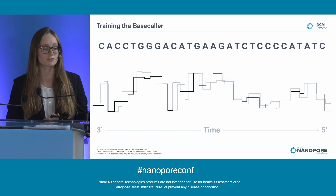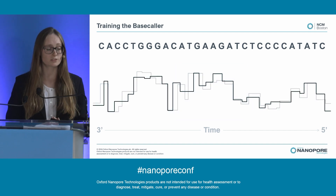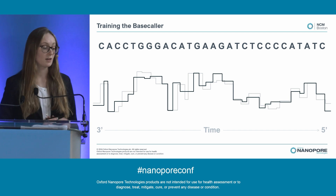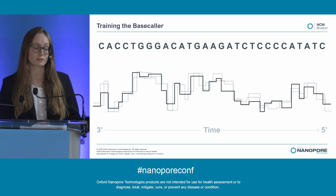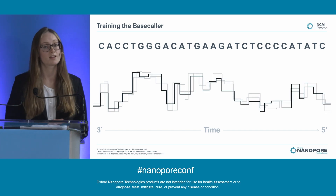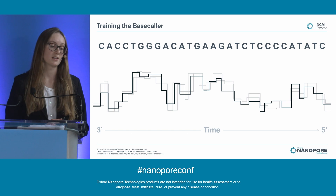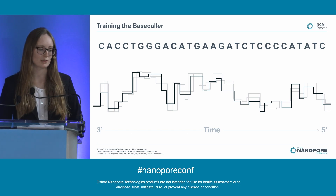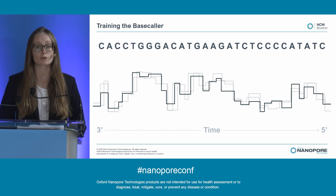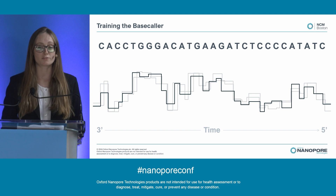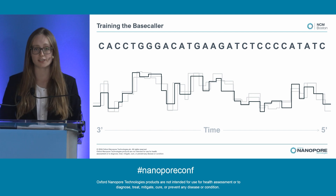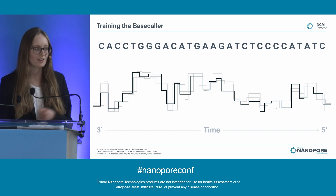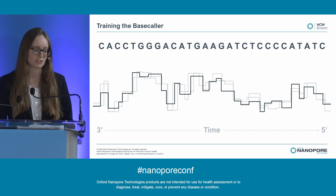You can have different signals that correspond with the same sequence — it might look something like this, or something like this, and there are infinite other combinations of features that could code for the same sequence. So it's really important that we train our base callers on a wide diversity of sequence contexts and species so that it can understand how to call all of these features.